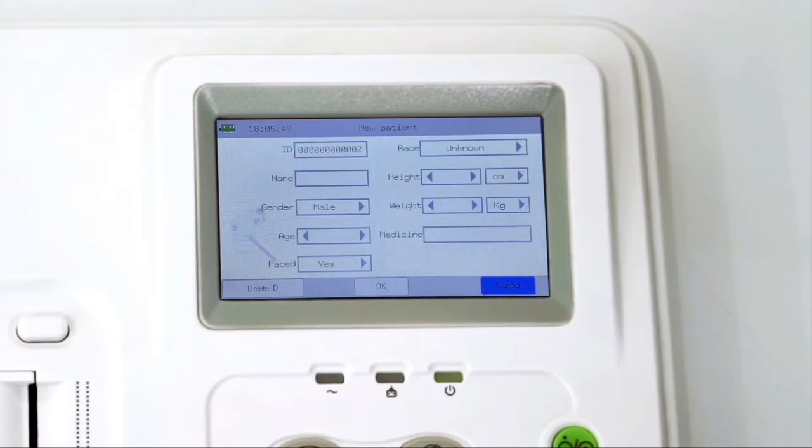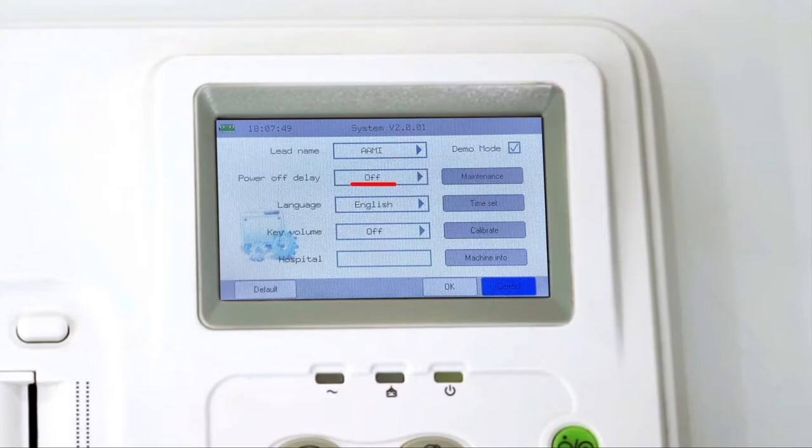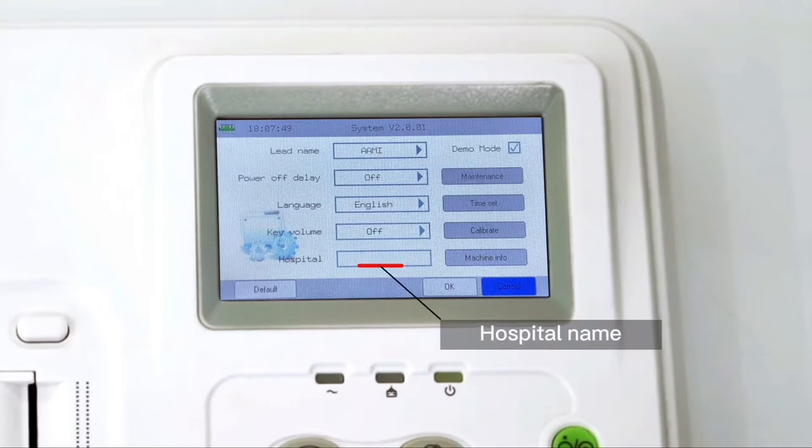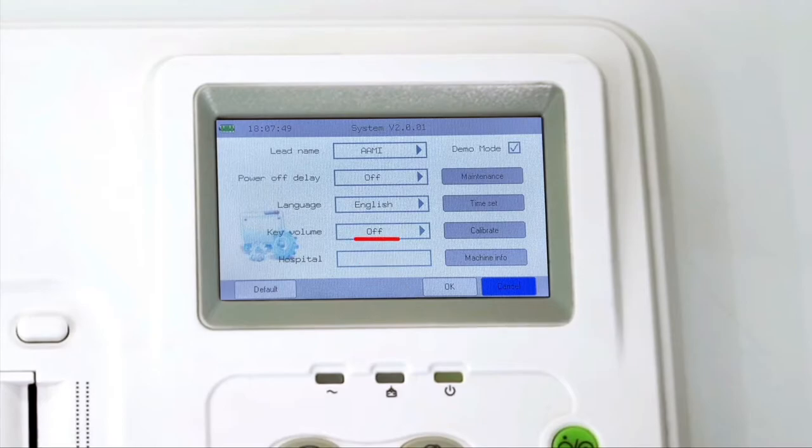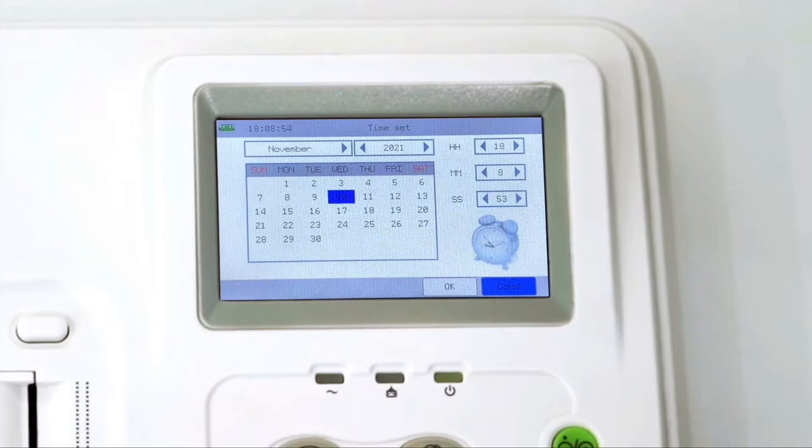Once completed, press OK to return to the previous menu. In the basic setup menu, select AMI or IEC as the lead notation. Select power off delay to set the automatic shutoff time of the electrocardiograph in case of power supply by built-in battery. Select the preferred language, input hospital name and it will be displayed in ECG report. Select key volume to open or close the volume of key sound and option for demonstration and calibration.